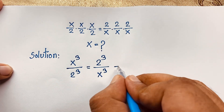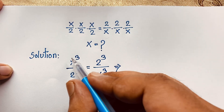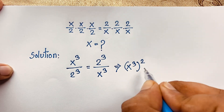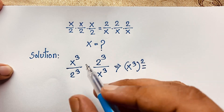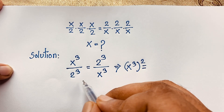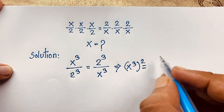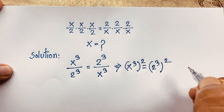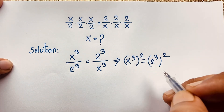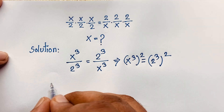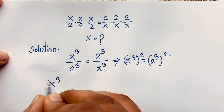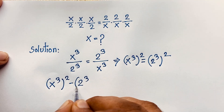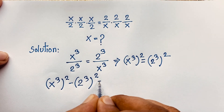Now you can see that multiplying the left side x³ by the right side x³ gives x to the power of 3 squared, which equals 2³ times 2³, or 2 to the power of 3 squared. Moving the right side over, we get x to the power 6 minus 2 to the power 6 equals 0.